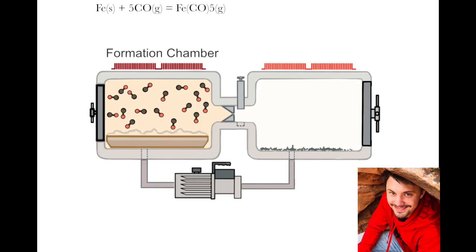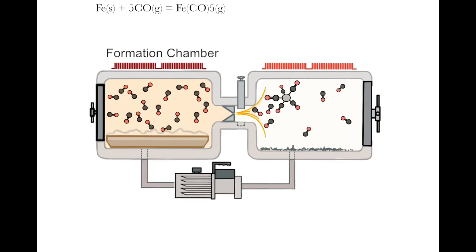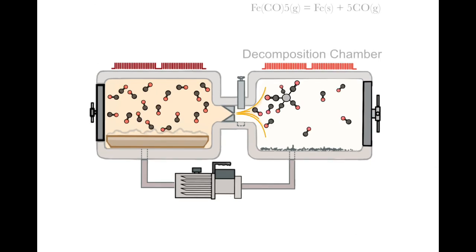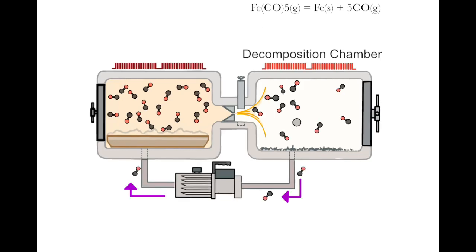In the formation chamber, a high carbon monoxide partial pressure favors the formation of iron pentacarbonyl gas. The iron-bearing gas is carried into a second, low-pressure chamber where the gas undergoes thermal decomposition into a metal product. The carbon monoxide is pumped back into the formation chamber for immediate reuse.